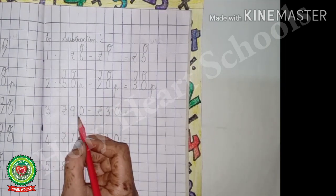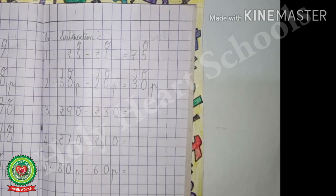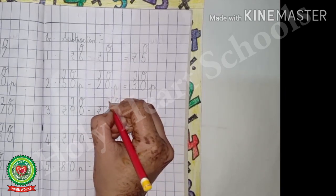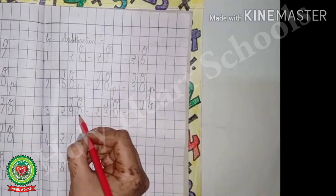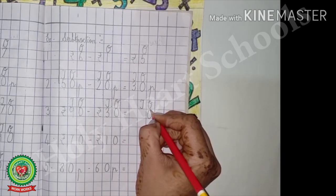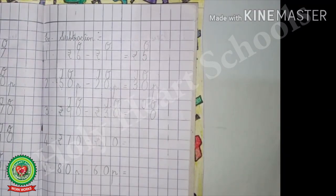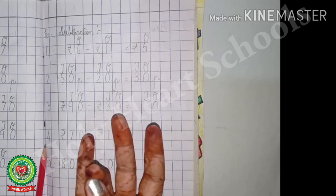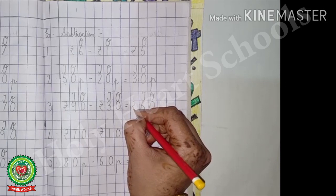Number 3: rupees 90 minus rupees 30. Before subtracting, write the place value chart — 1s and 10s on both numbers, and 1s and 10s in the answer. 0 minus 0, the answer is 0 — write 0 under 1s. Now 9 minus 3: counting after 3 up to 9, that is 6 steps, the answer is 6 — write 6 under 10s. Write the unit, which is rupees.